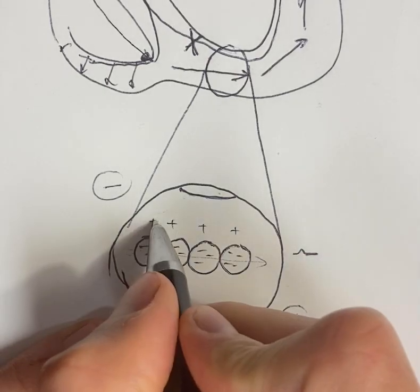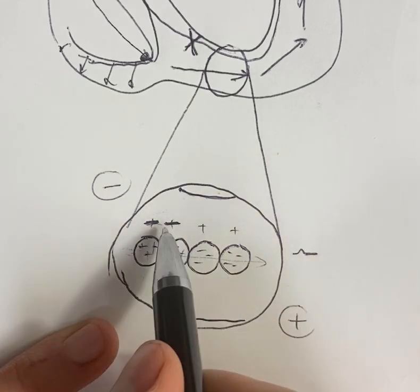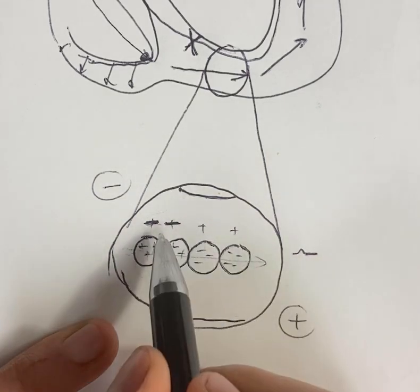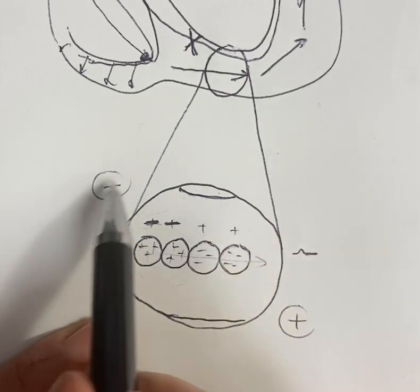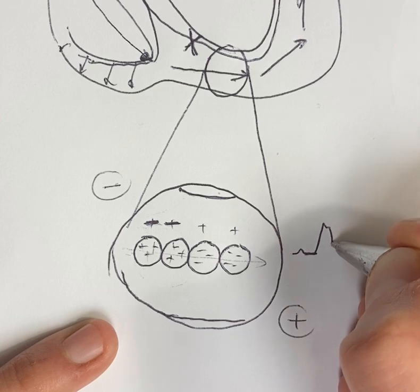the sodium rushes in. The outside turns negative. The inside turns relatively positive. So you have a negative to positive electrical field kind of aligning with lead 2. And it's why you end up with a positive QRS here.